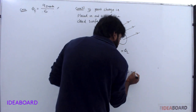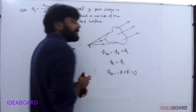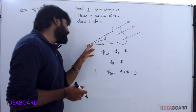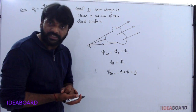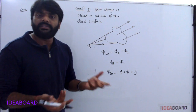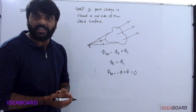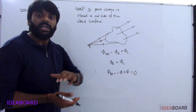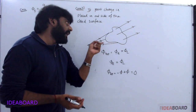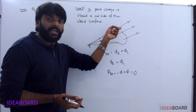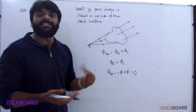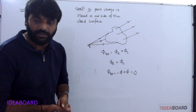Both entering and leaving fluxes are the same magnitude, so they cancel and total flux is equal to zero. If the point charge is in outside of the closed surface, total flux is zero. The flux associated with this closed surface is equal to zero.